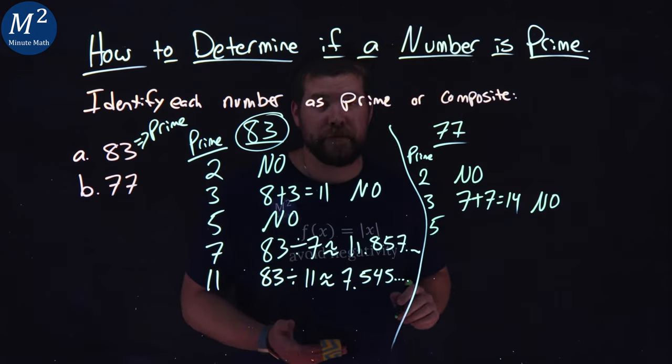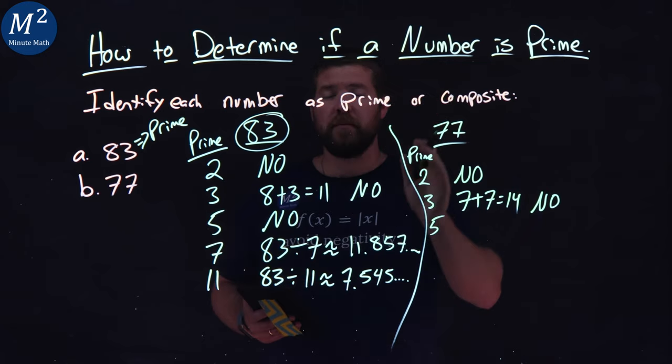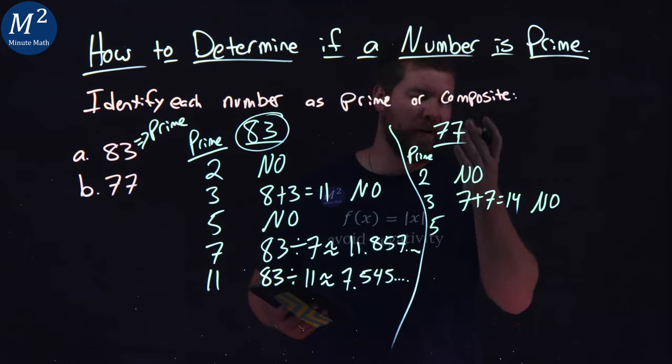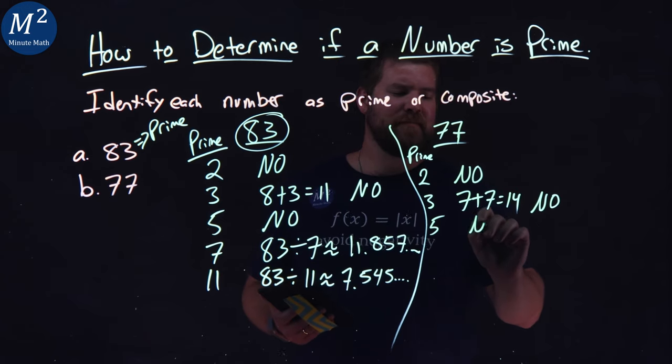Next prime number is 5. Does the last number here, 7, end in a 0 or a 5? No, it ends in a 7. So we're good there.